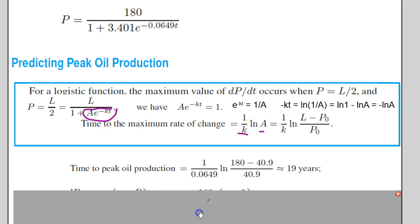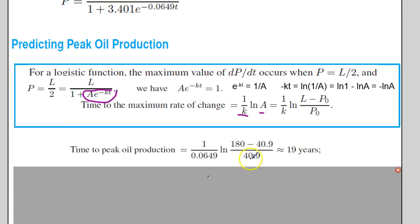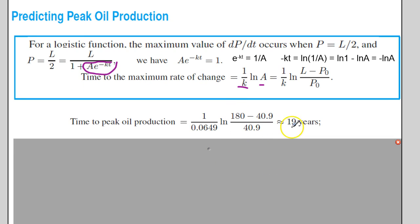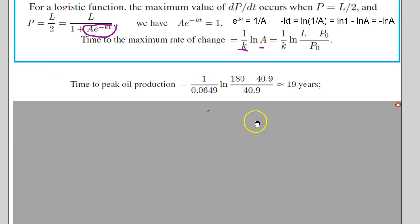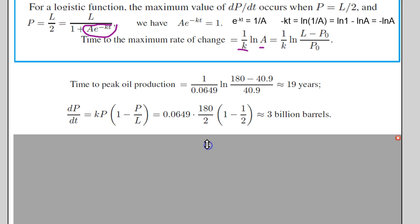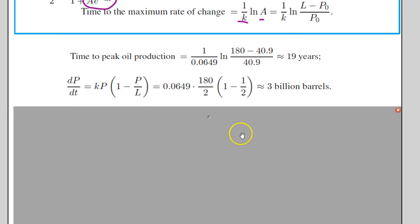We end up getting t around 19 years. So 19 years from 1950 is 1969. So he said the time to peak oil production would be around 1969. They will produce around 3 billion barrels, and it'll be a difference of 3 billion barrels.